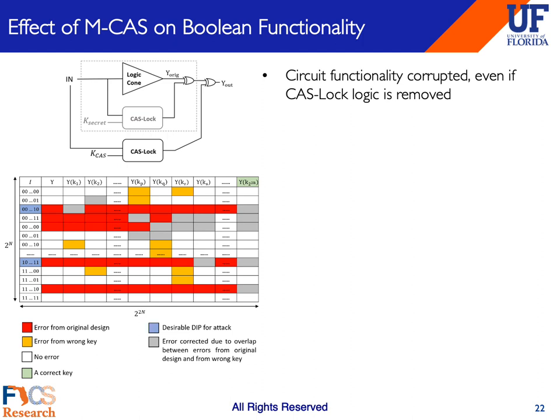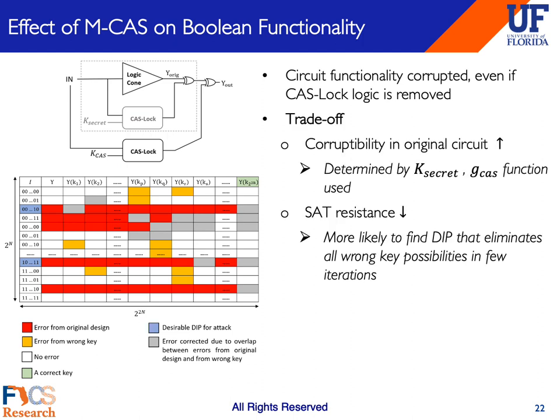Unfortunately, this countermeasure is not without its drawbacks. Most notably, with MCAS, if you try to increase the corruptibility of the locking, it results inevitably in reduced SAT-attack resistance. This happens mainly because the original circuit's output is corrupted on a certain number of input patterns due to the embedded CasLock block with K-secret. If the SAT-attack algorithm finds any of these patterns—highlighted in blue in the truth table shown—it is able to arrive at the correct key in a single iteration. This is probabilistic from the perspective of the SAT-attack, but unfortunately the probability of success increases as output corruptibility is raised. This brings us back to the trade-off between SAT-attack and corruptibility, but in the context of white-box attacks.